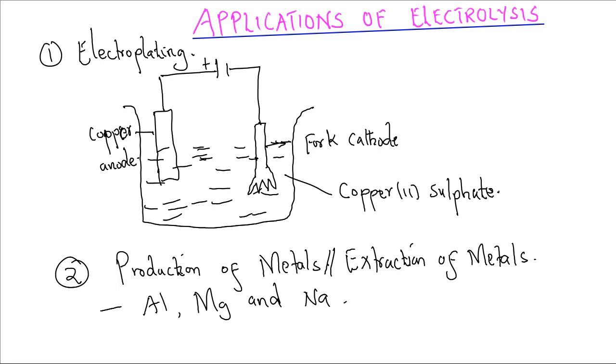Similarly for extraction of sodium from rock salt as the main ore, we have molten sodium chloride used as the electrolyte. There is some calcium chloride added just to lower the melting point. The sodium ions migrate to the cathode and they get reduced to sodium metal.